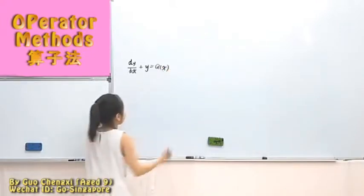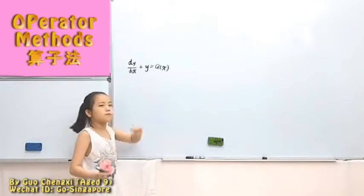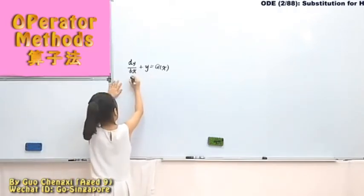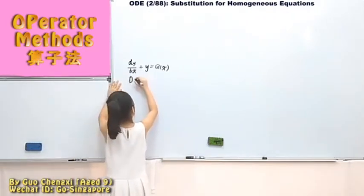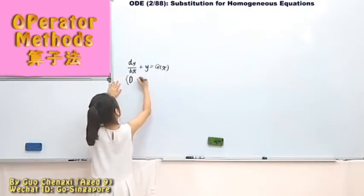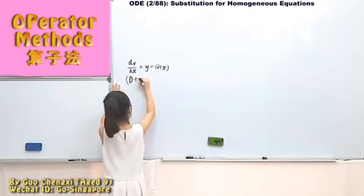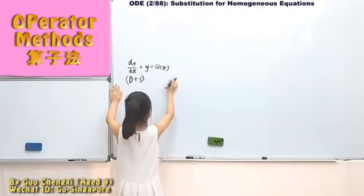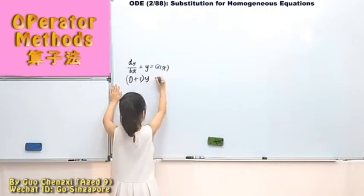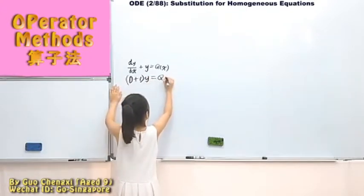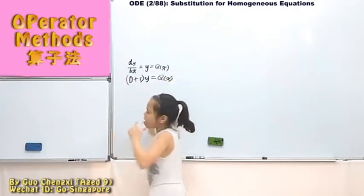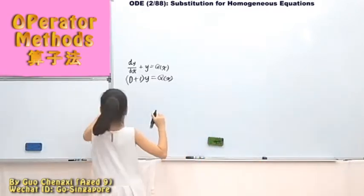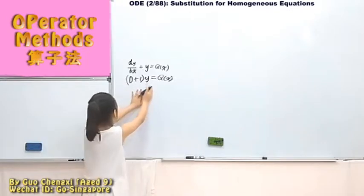Why don't we have a p(x) here? Since we don't have a p(x), then it will become — you can write it like this. Other than that, we have y equal to q(x). But every time, we always wanted to find out what y is.